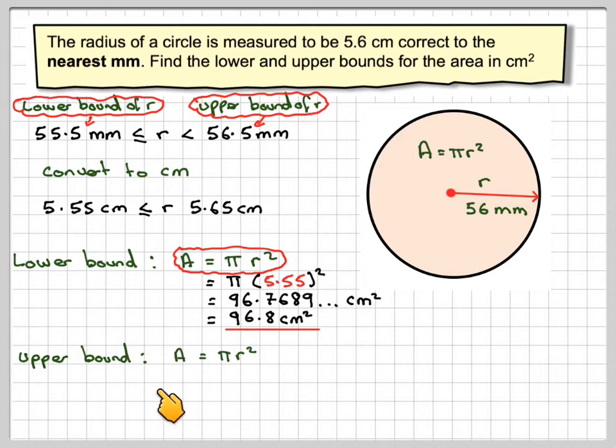The upper bound, using A is equal to π r squared, using this length here, will be π times 5.65 squared, which actually gives me 100.2874 centimeters squared. With that rounded off to three significant figures, which will just be 100, so it will be 100 centimeters squared.